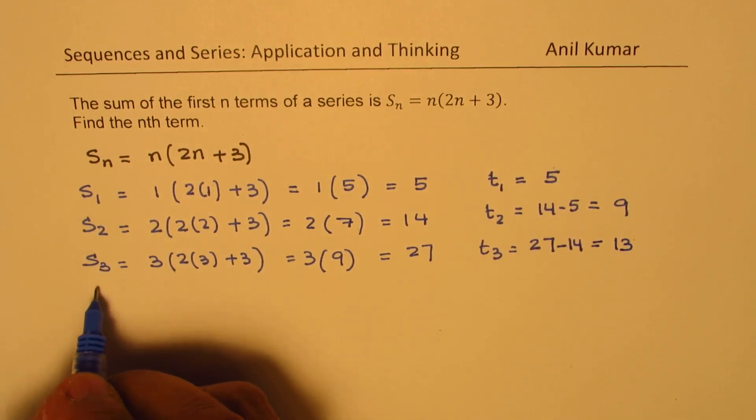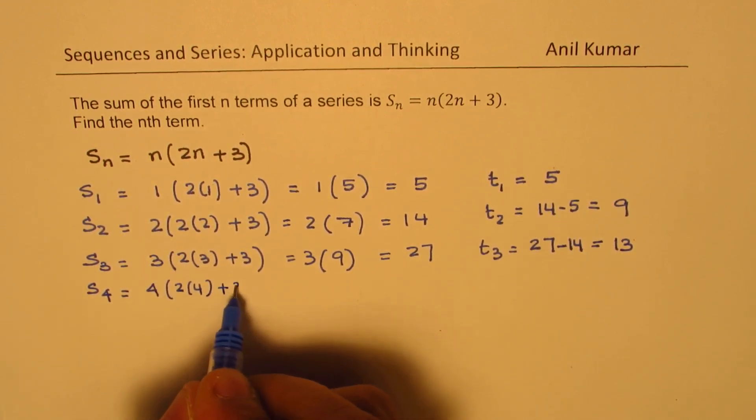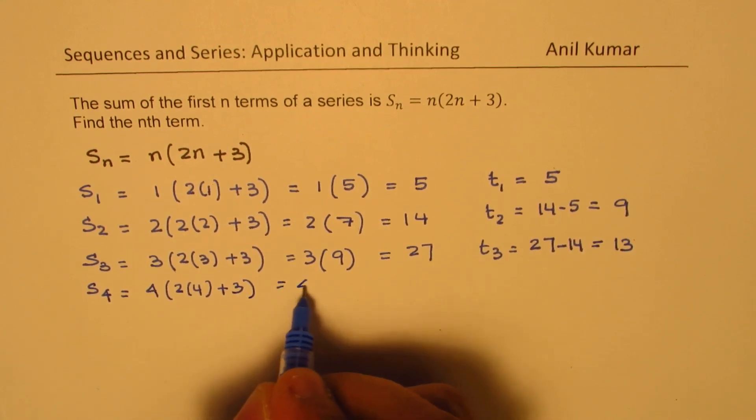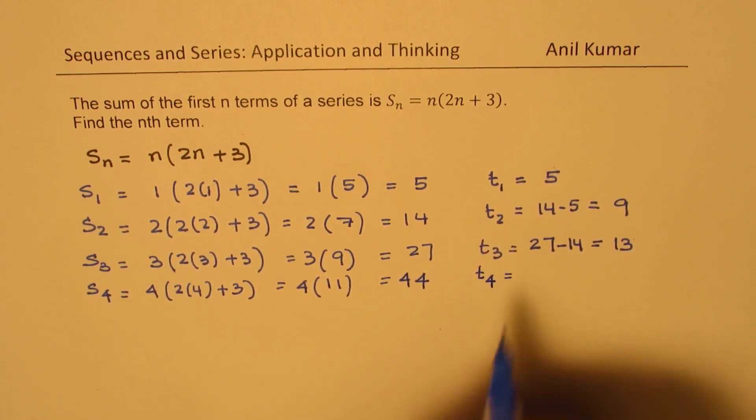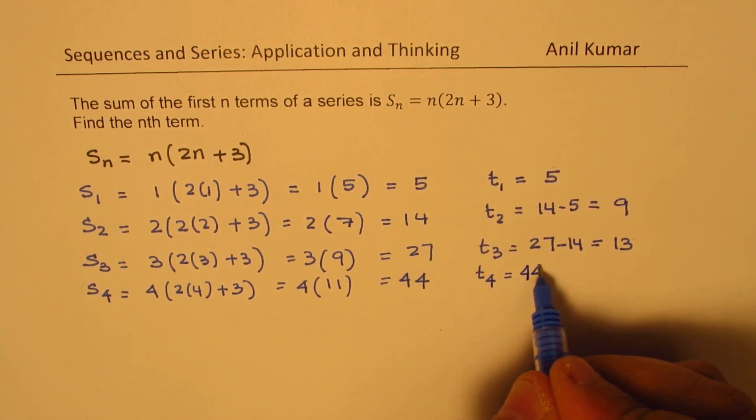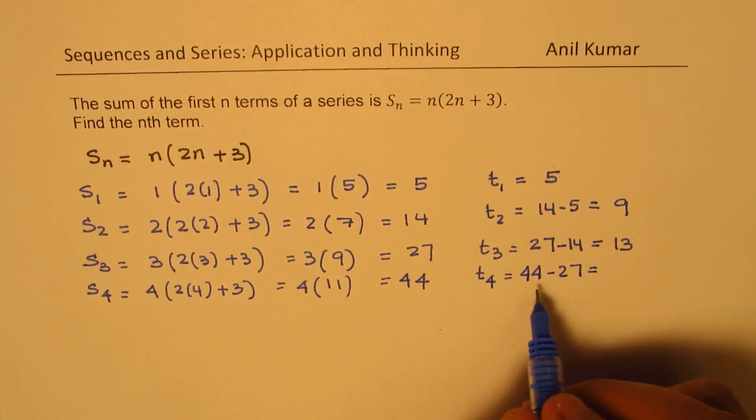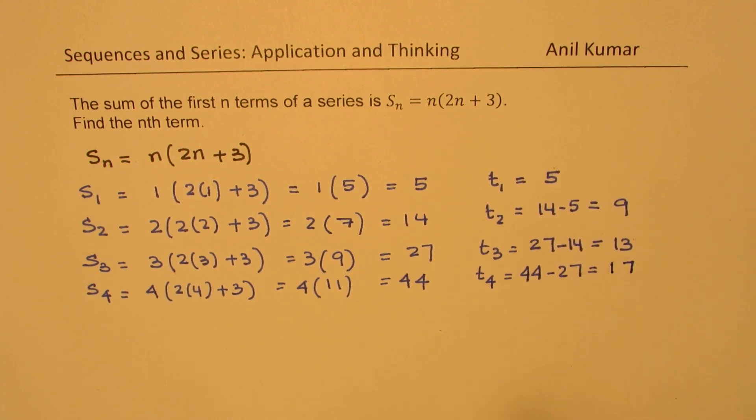And similarly we can find the fourth term, which is going to be 4 times 2 times 4 plus 3, and that is 4 times 8 plus 3 is 11, and we get 44. So the fourth term in this particular series will be 44 take away 27. So when you take away 44 from 27 we get 14 take away 7 as 7. So we get 17.